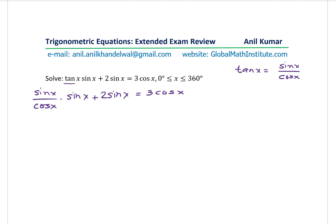Second step which is very important is to get rid of fractions. So we will multiply everything by cos x. So I could write this as sin square x plus 2 sin x cos x equals to 3 cos square x. Now we can bring them together and rewrite as sin square x plus 2 sin x cos x minus 3 cos square x equals to 0.